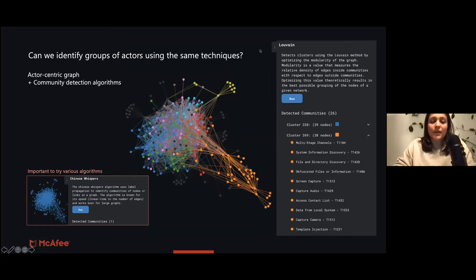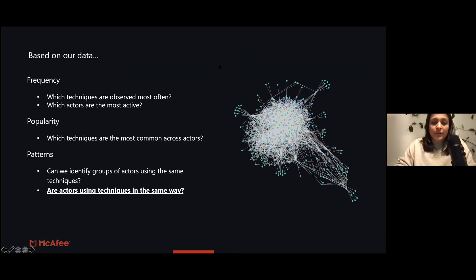Can we identify groups of actors using the same techniques? In the actor-centric graph, we apply community detection algorithms to basically be able to cluster actors together. But one thing that we did notice is that the graph was still very, very dense, and there were no—at least using the Chinese whisper algorithm—there were no clusters that were identifiable. If we use the Louvain cluster detection algorithm, then we do find something, but it's still not completely, that we can say for sure that these clusters are valid.